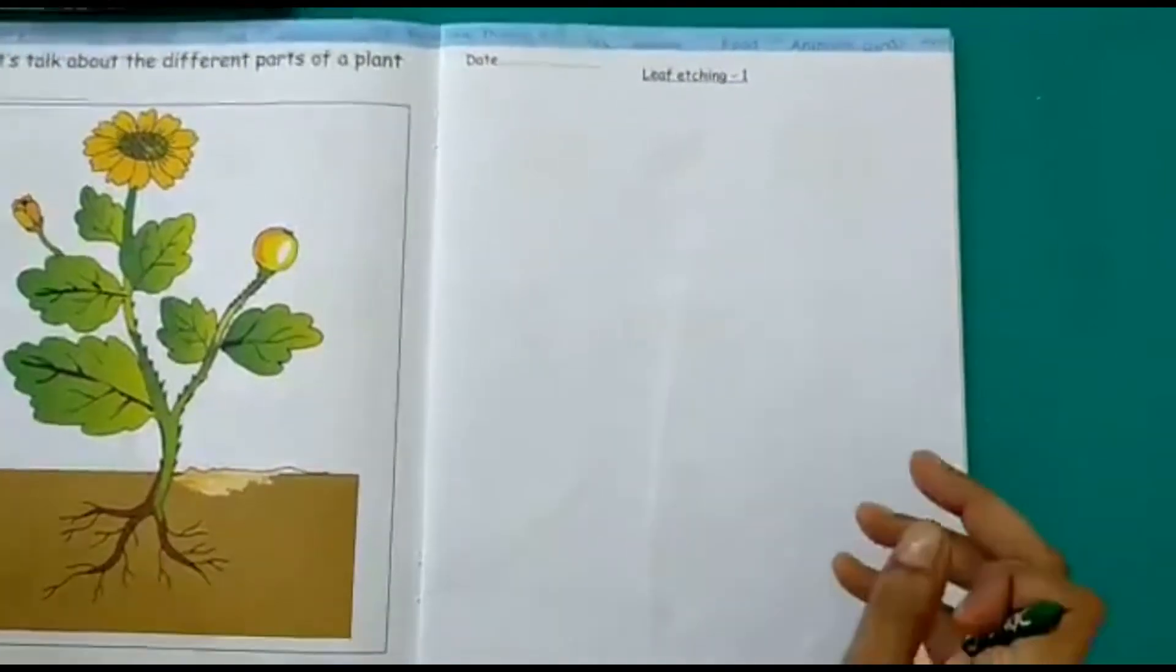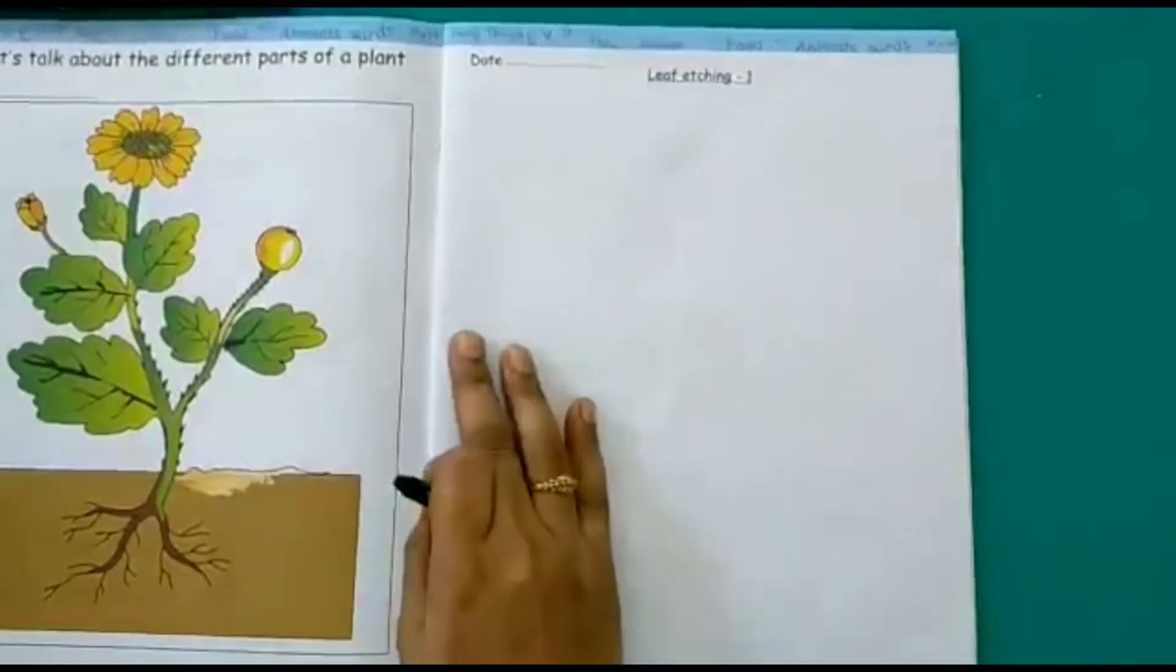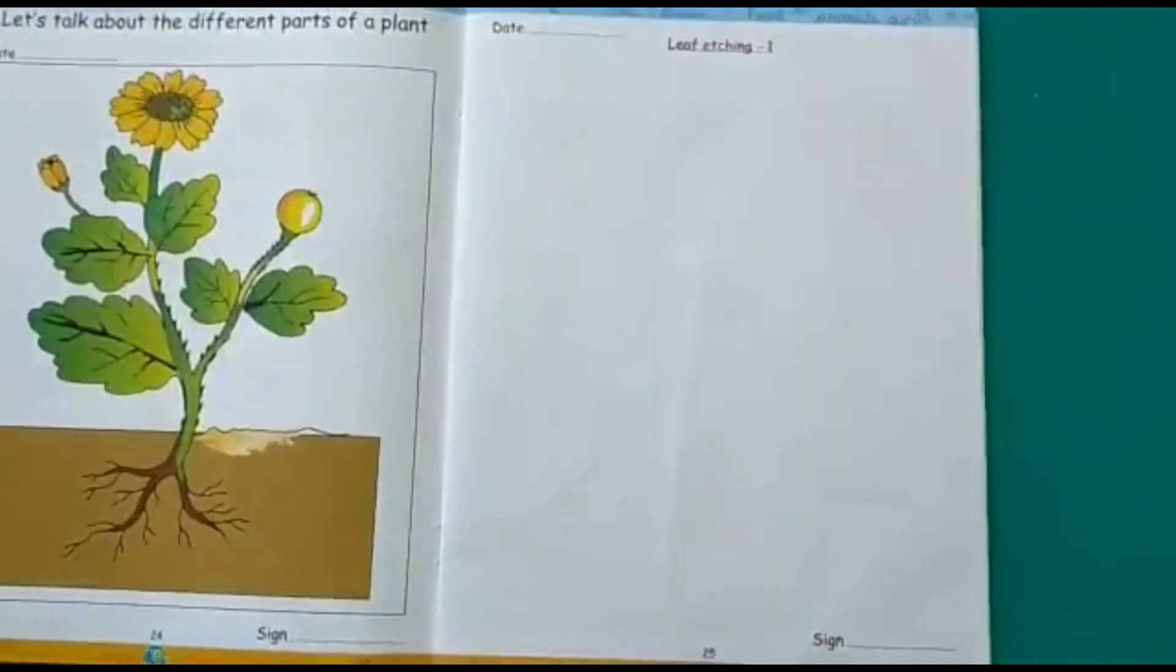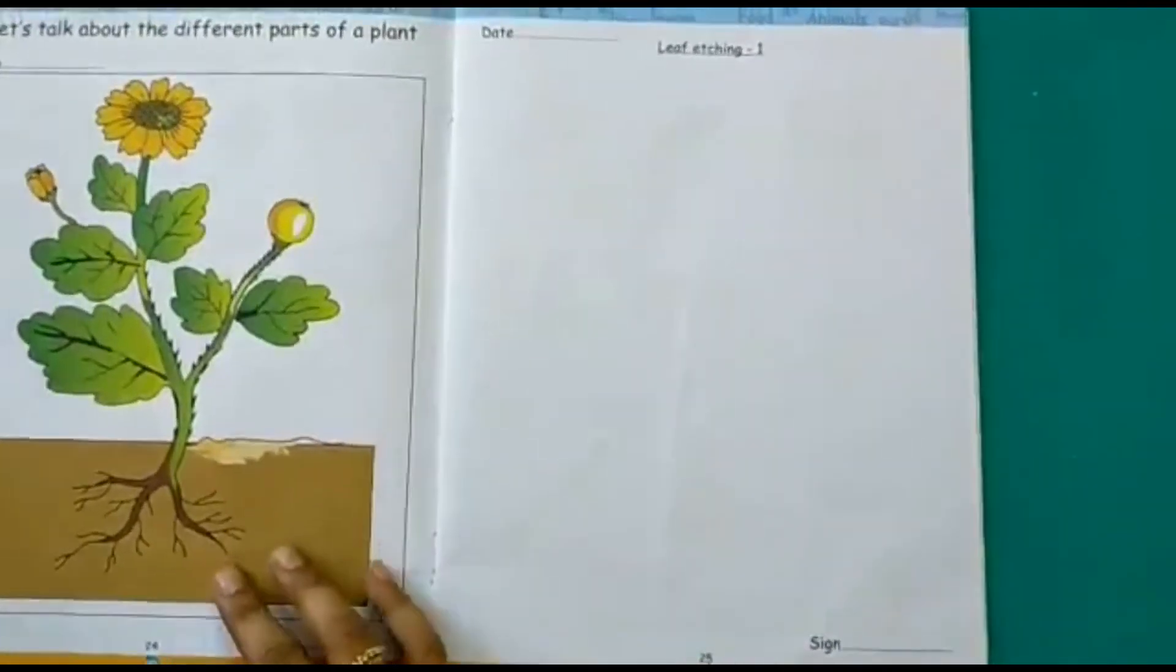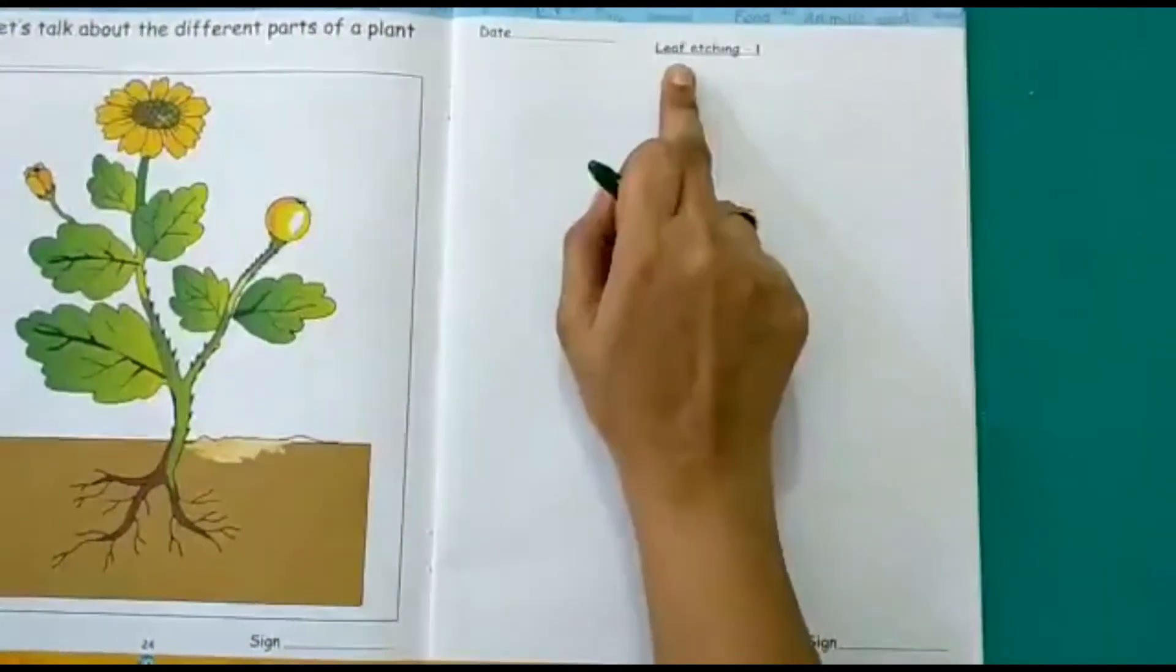Children let's have some fun today. In our EVS workbook on page number 25, let's do a fun activity. This is leaf etching.